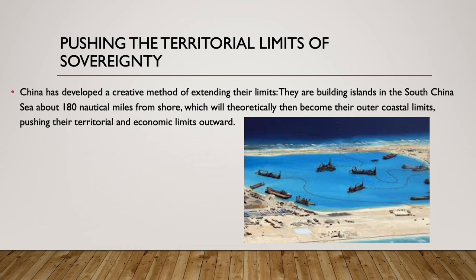China has developed an extremely creative method of expanding their territorial limits in the ocean. They are building artificial islands in the South China Sea, about 180 nautical miles from shore, which will then theoretically become their outer coastal limits — pushing both their territorial and economic limits outward.